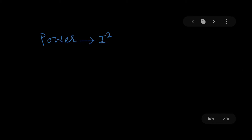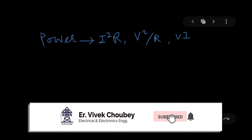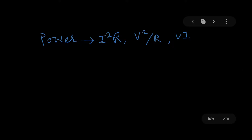If I have a circuit and I want to find out the power across any given component, I should use I²R, V²/R, or VI. The question is: when should I go with I²R, when should I go with V²/R, and when should I go with V times I? In today's video I am going to clear this doubt for you.